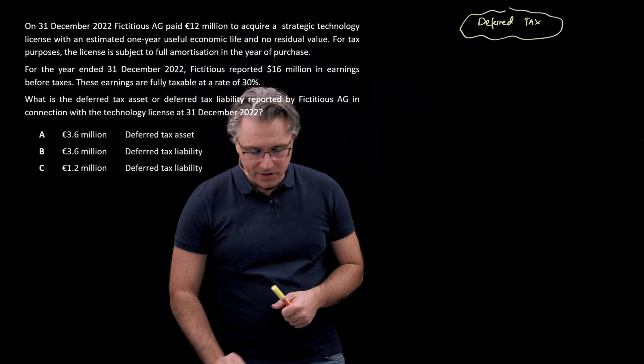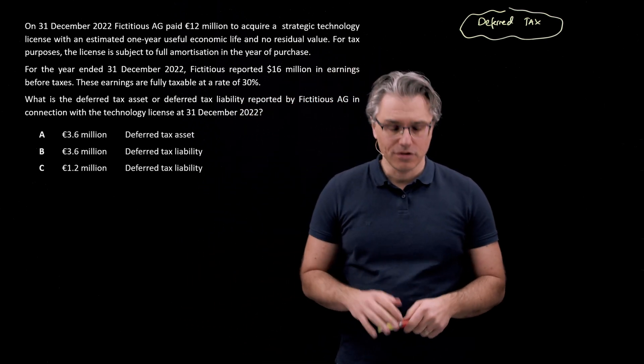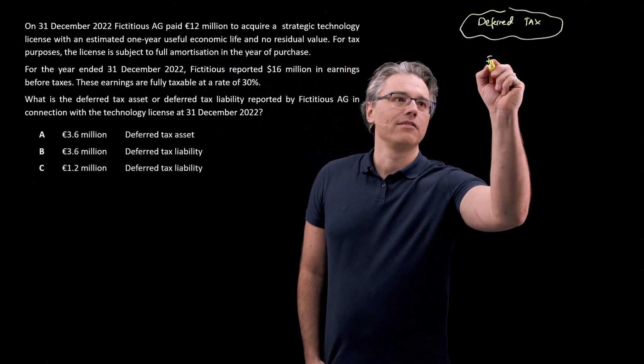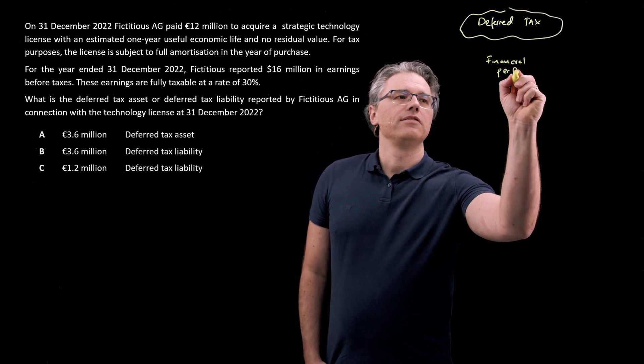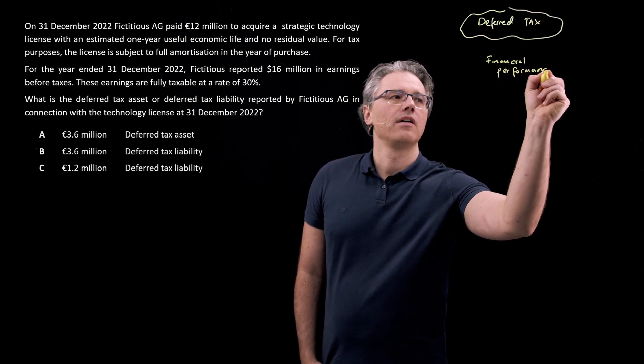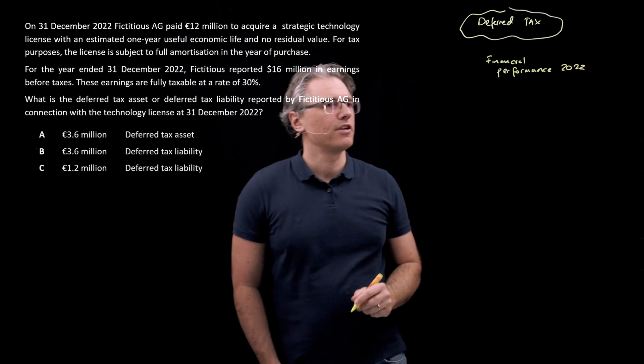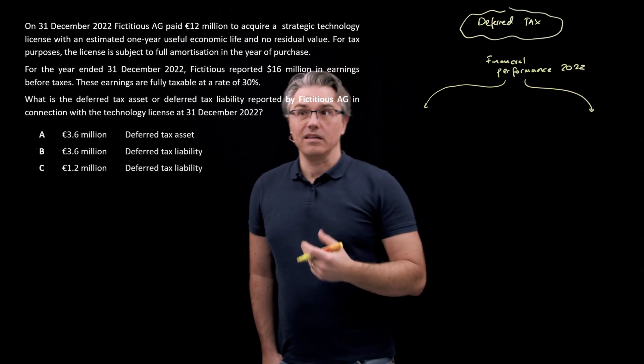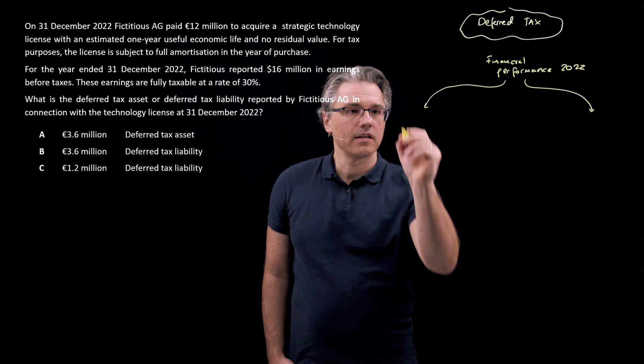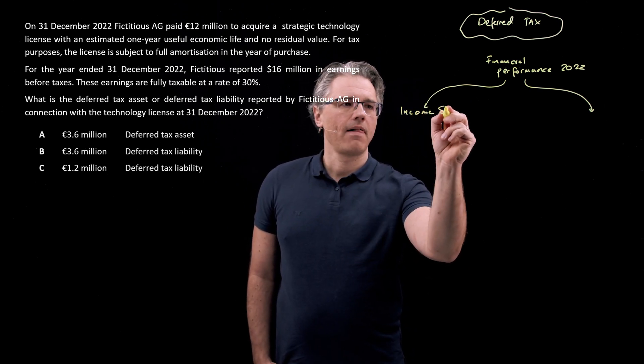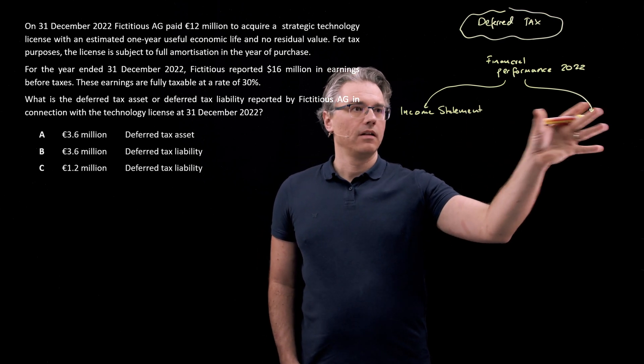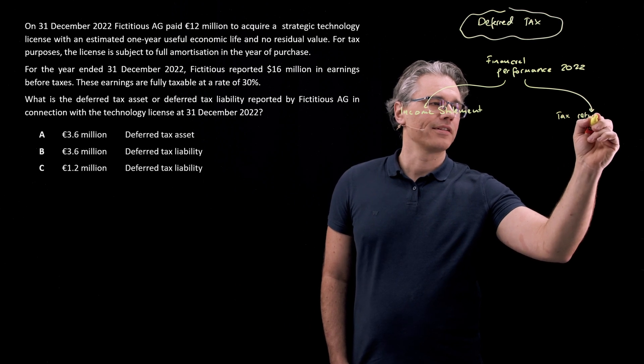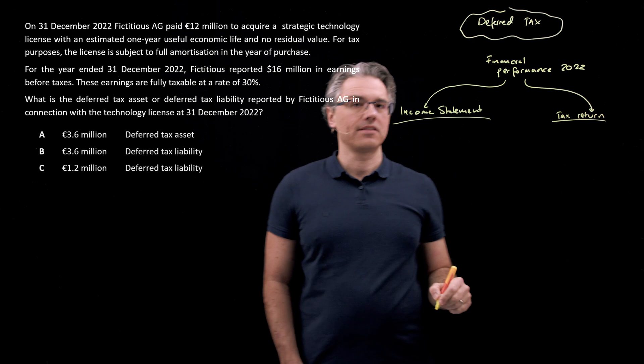Let me start by drawing out the financial performance of the business for the year 2022. But in line with the approach from the previous questions, I'm going to split this into performance measured in accordance with the financial reporting rules as evidenced in the income statement, and on the other side here, the tax return, which is our basis for computing taxable income and tax to be paid.